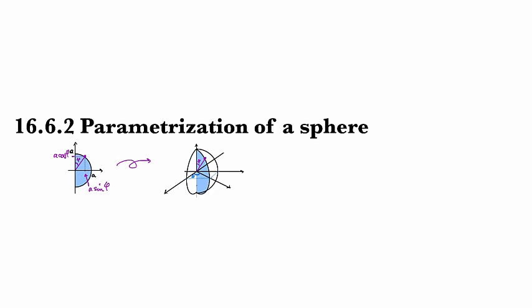this is theta. So then for this point on the horizontal, this would be a cosine theta, and this one would be a sine theta.